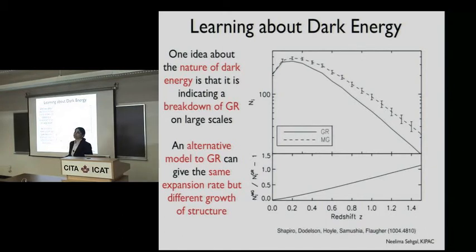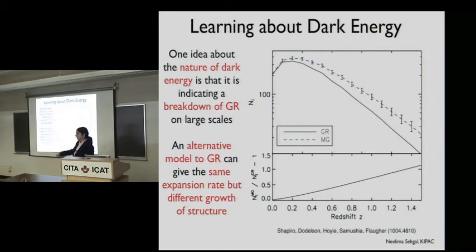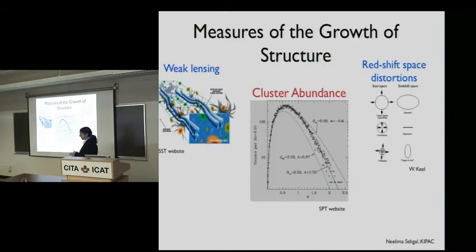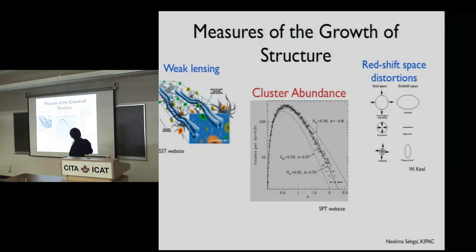It's important to note that any modification or dark energy theory other than the cosmological constant actually has more problems because there are additional fine-tuning issues to explain. The cosmological constant model is actually the simplest, even if you can't explain it. The dark energy task force has identified at least three major techniques to measure structure growth: weak lensing cosmic shear, redshift space distortions, and cluster counting, which I'm going to focus on.